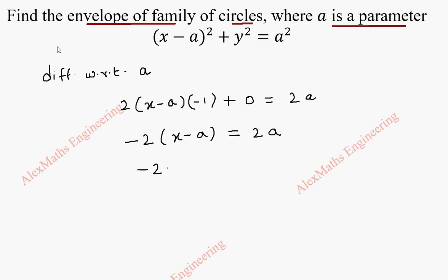By multiplying this inside, we get -2x + 2a = 2a. We can cancel this. We get -2x = 0 and x = 0.